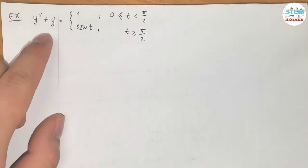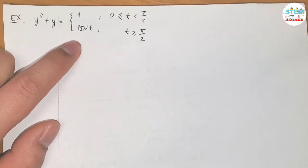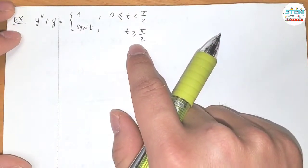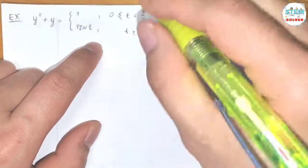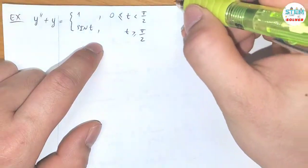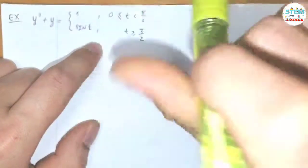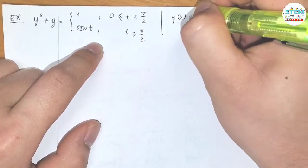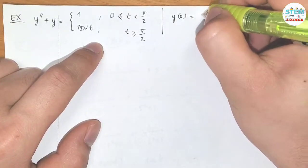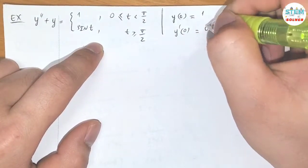Find the initial value problem of this function, of this equation here, and you're also given the condition. Oh, we're missing the condition, so let me write down the condition here. The condition is y(0) equals 1 and y prime of 0 equals 0, alright?